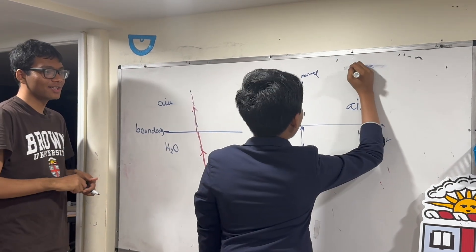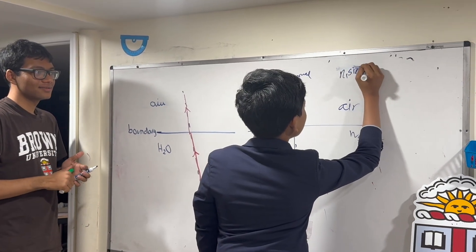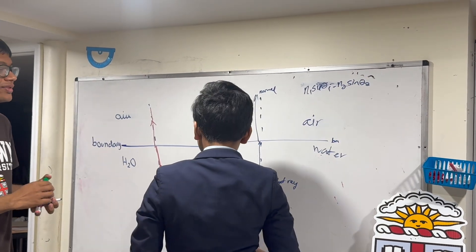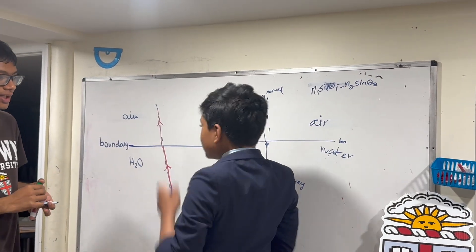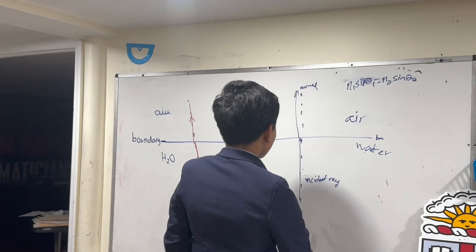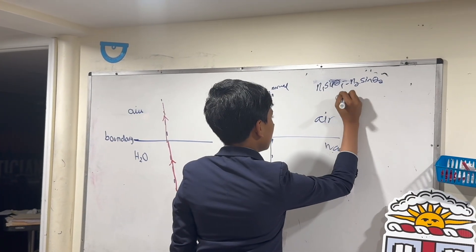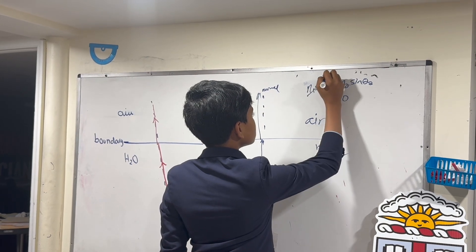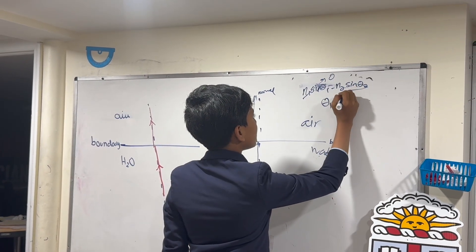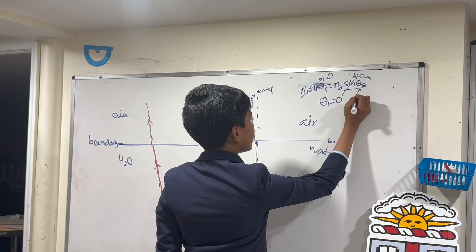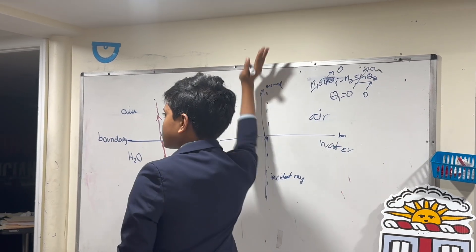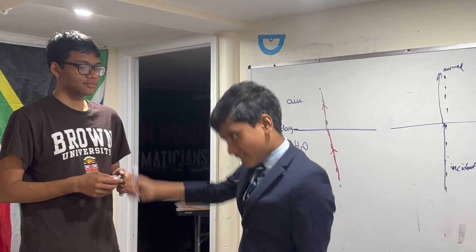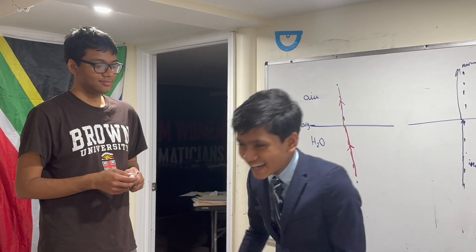From Snell's law, n1 sine theta one equals n2 sine theta two. It should be obvious that if theta one equals zero, then this whole side goes to zero, so theta two can only be zero as well.